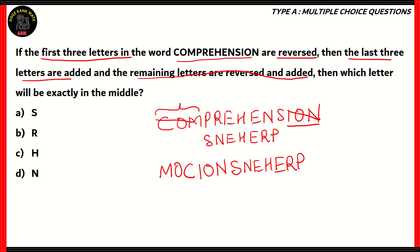The question is asking which letter will be exactly in the middle. So if we cancel out letters from both ends — M and P, O and R, C and E, I and H, O and E, N and N — we will get S as the exact middle of this phrase. So option A, S, will be the correct answer for this question.